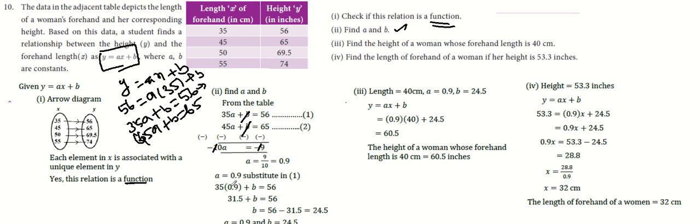The a value is 0.9. Substitute into the first equation: 35 times 0.9 plus b equals 56. 31.5 plus b equals 56. Then b equals 56 minus 31.5, which is 24.5.